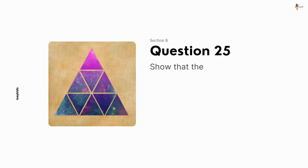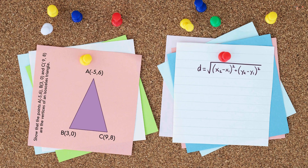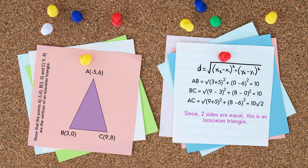Show that the points A(-5, 6), B(3, 0), and C(9, 8) are the vertices of an isosceles triangle. The distance formula is applied and substituting the given values, since two sides are equal, this is an isosceles triangle.